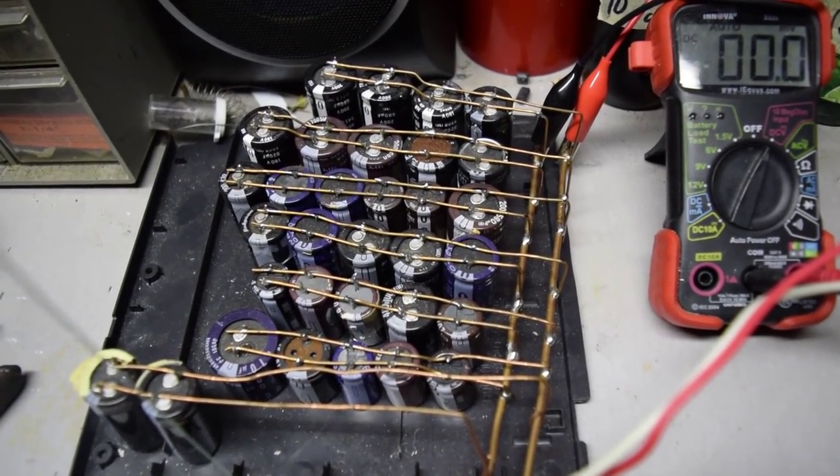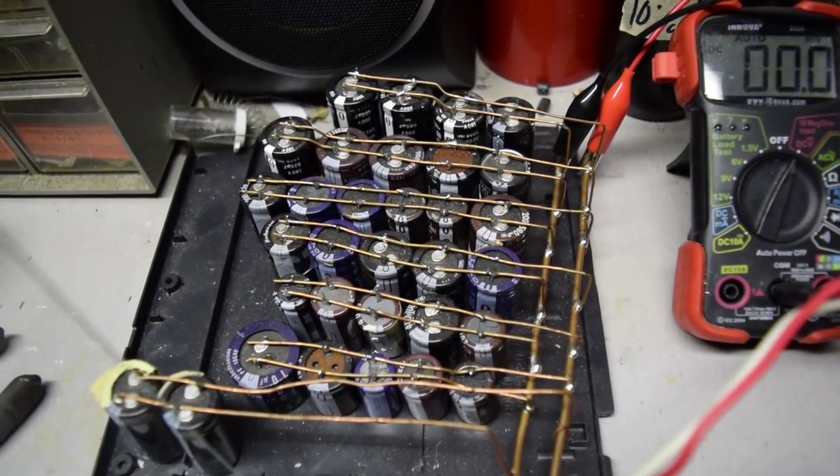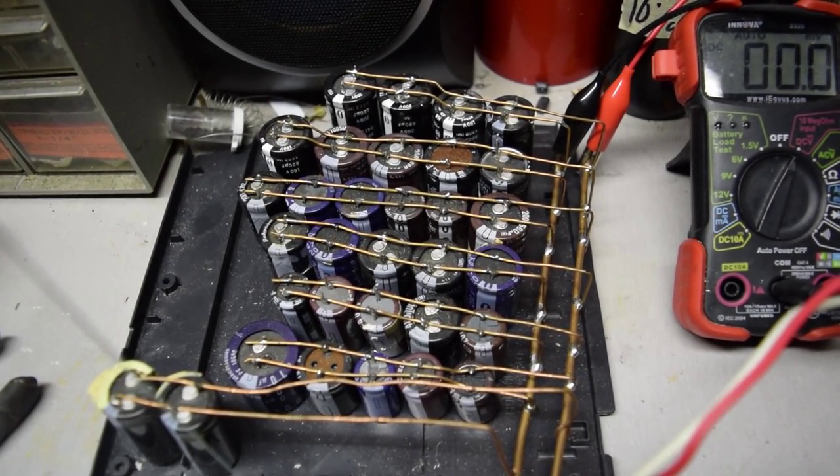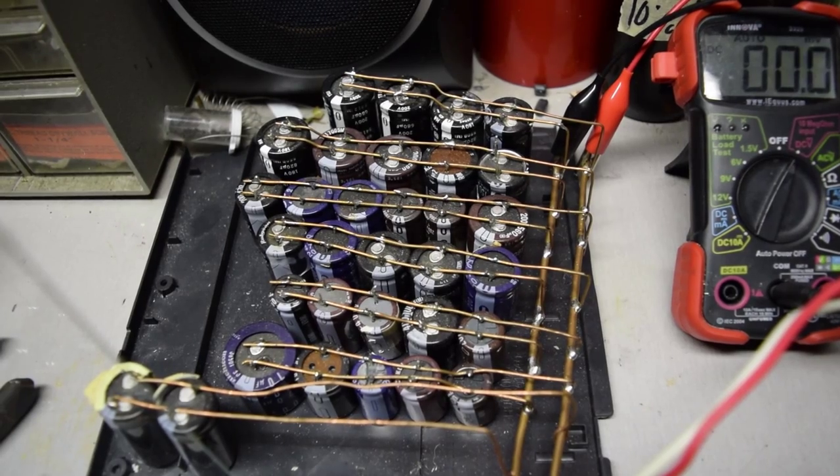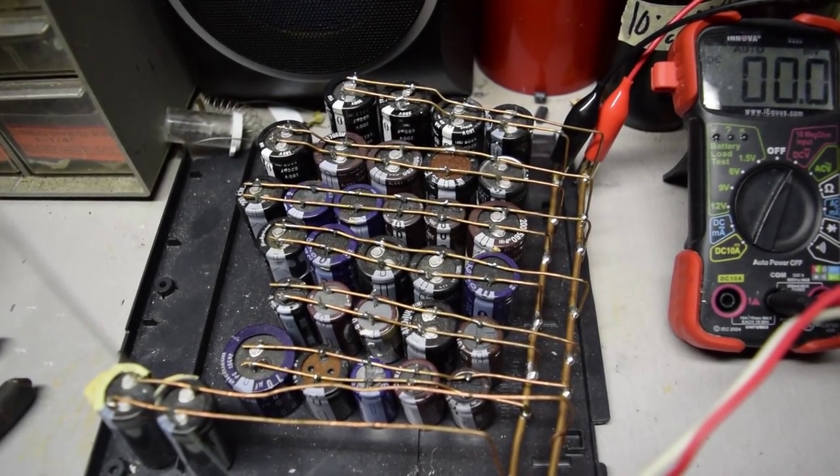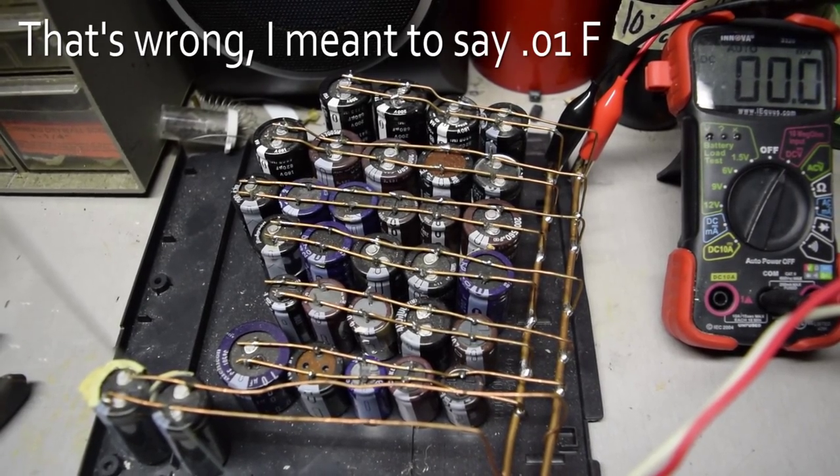First I'll give a few specs on the bank. It is 32 capacitors all connected in parallel. It can charge up to 200 volts, but the charger only allows it to charge up to 170, and it is 0.01 farads.